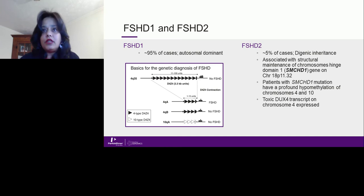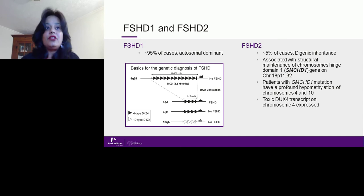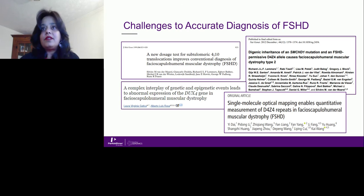In FSHD2, the disease is associated with the SMCHD1 gene on chromosome 18p11.32, which encodes the structural maintenance of chromosome hinge domain 1. Patients with SMCHD1 mutations have profound hypomethylation of chromosomes 4 and 10. With repeat contractions of 1 to 6 on chromosome 4q, disease severity depends on repeat count. With 7 to 10 repeats, a patient could be an asymptomatic carrier, as hypomethylation is needed to express the disease phenotype.